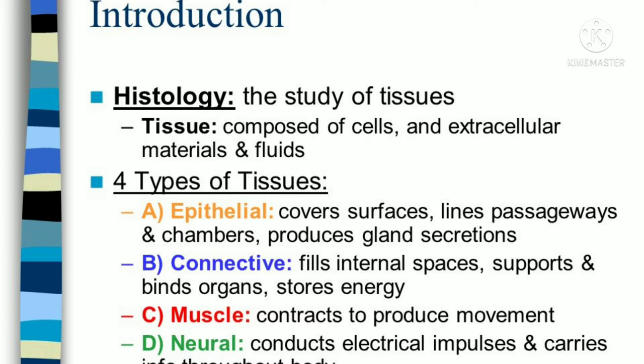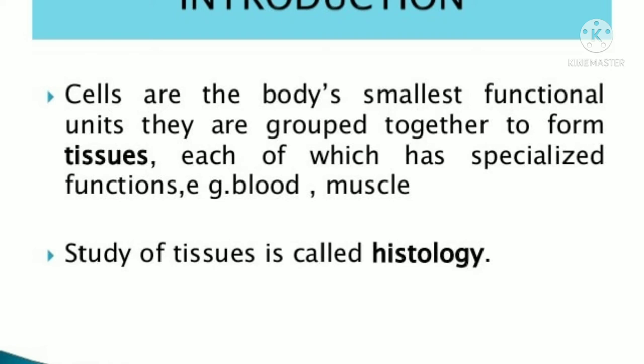Histology is the part of science — the study which deals with the study of tissue. The study of tissue is otherwise called histology. Tissue is composed of cells, extracellular materials, and fluids. There are four types of tissue: epithelial, connective, muscular, and nerve tissue. If asked to define tissue, you can say: a group of cells similar in structure, working together to perform a particular function, forms a tissue.